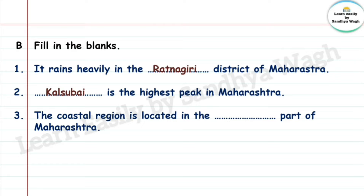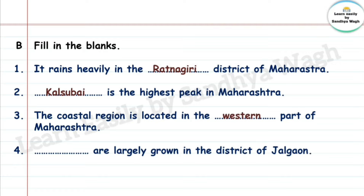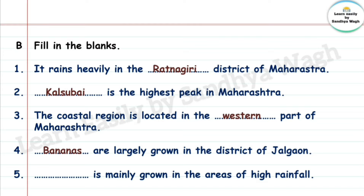3. The coastal region is located in the western part of Maharashtra. 4. Bananas are largely grown in the district of Jalgaon. 5. Rice is mainly grown in the areas of high rainfall.